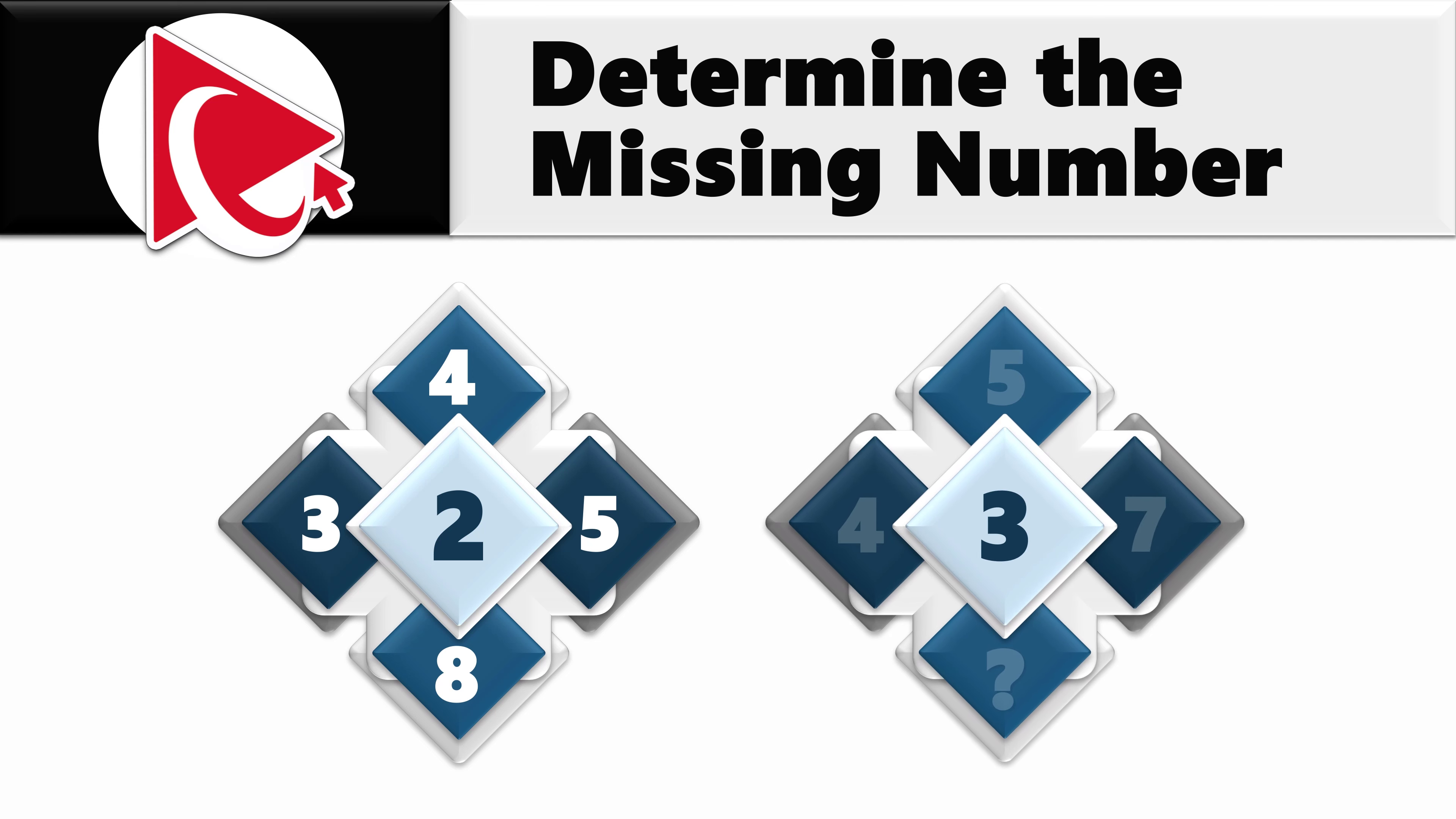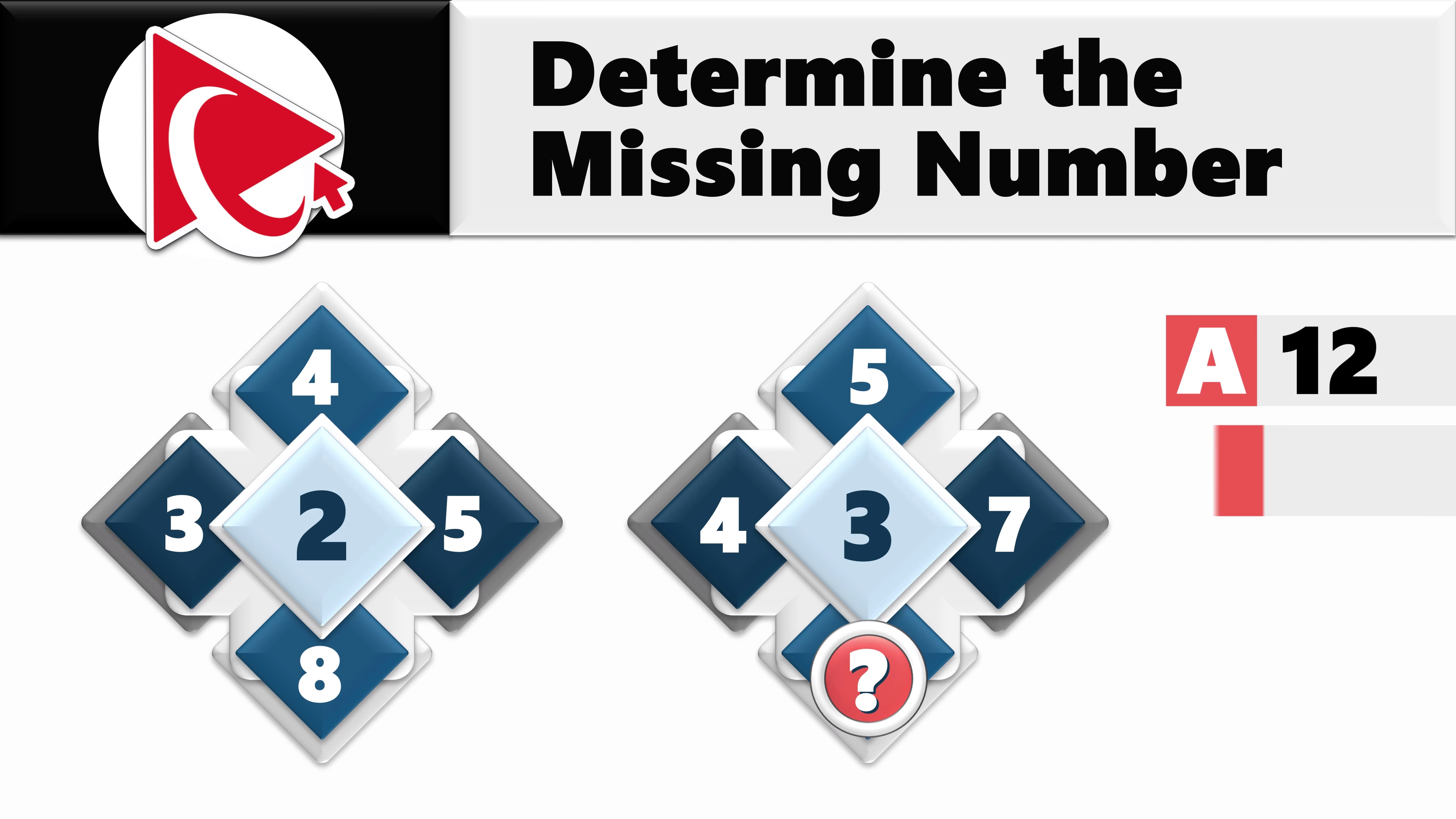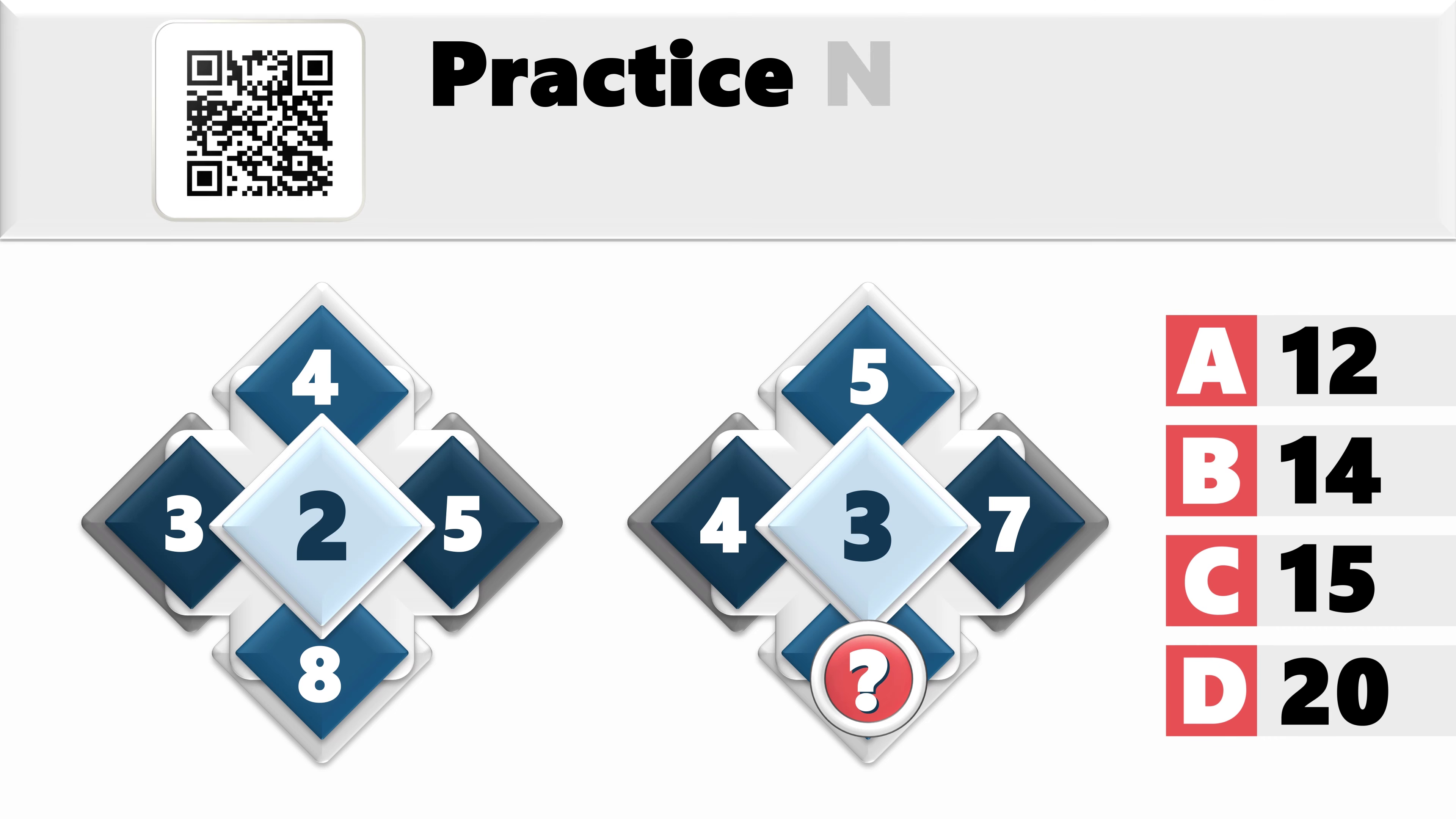In the second diamond, the middle number is 3. And starting from the 9 o'clock, the numbers are 4, 5, 7, and then comes the missing number, which you need to calculate and select out of 4 possible choices. Choice A, 12, choice B, 14, choice C, 15, and last but not least, choice D, 20.